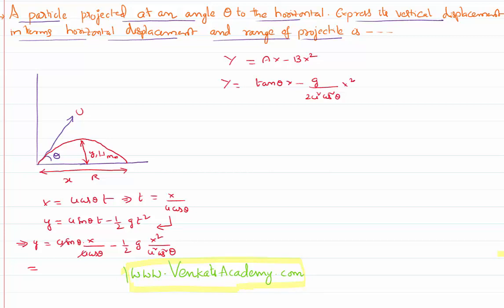u and u will cancel. y = tan θ × x - g / (2u² cos² θ) × x². This is ax - bx² where a and b are constants.